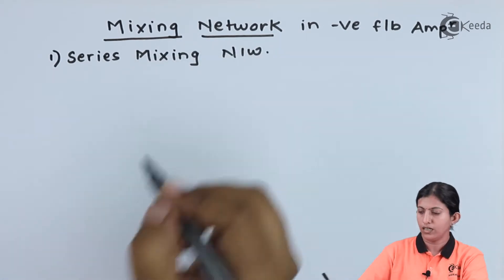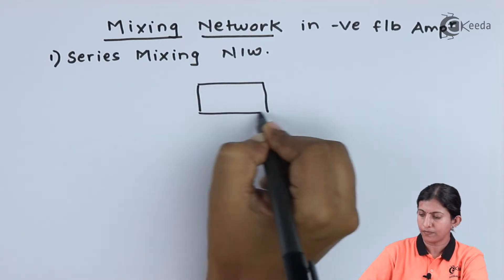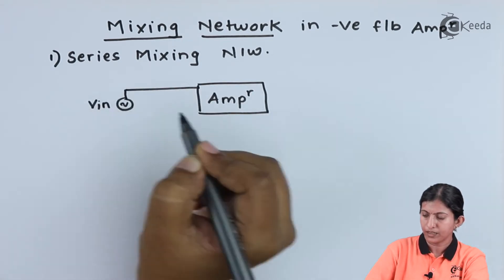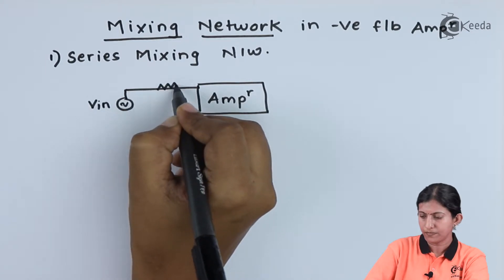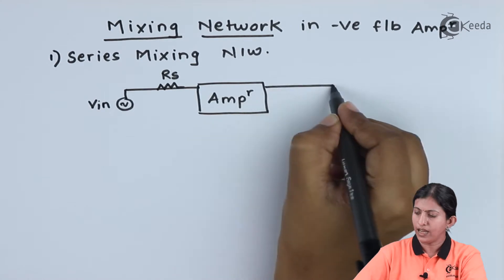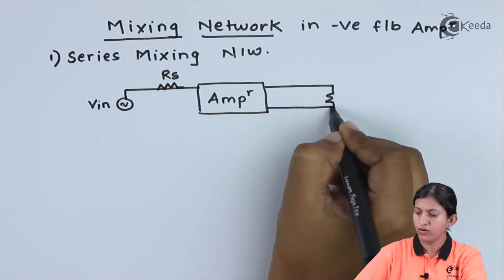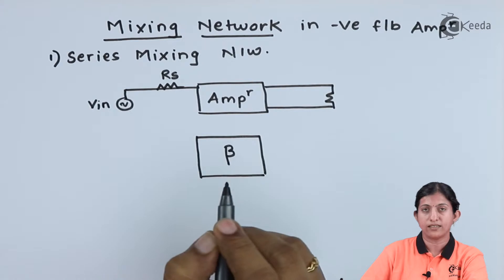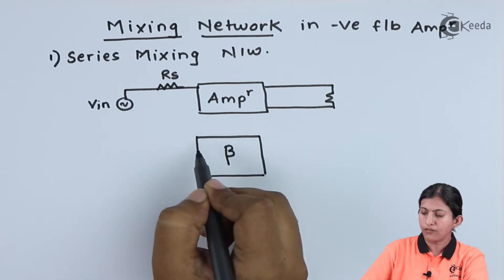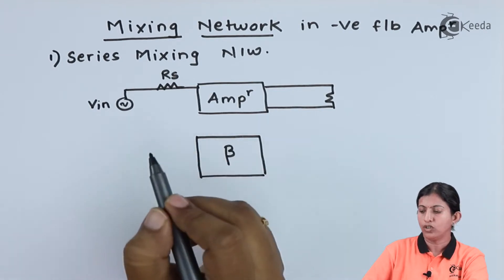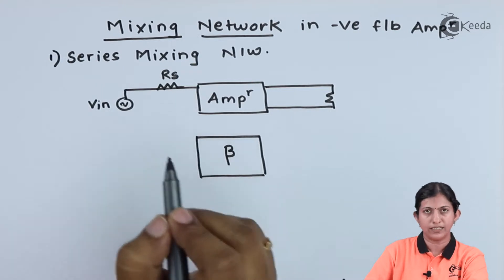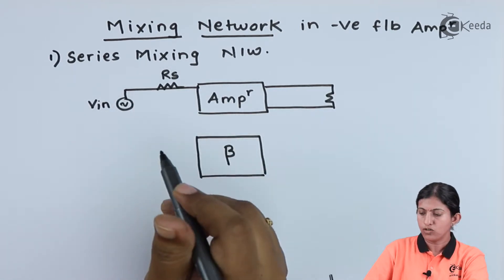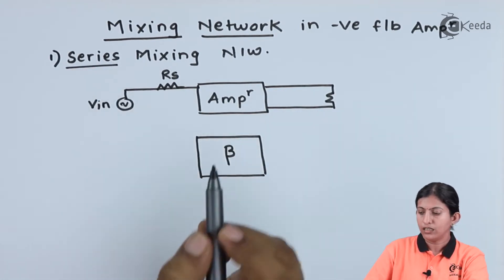In the series mixing network, we use an amplifier. We apply the input Vin with series resistor Rs, and we get the output across the load resistor. We take part of the output signal, which we term beta — the feedback signal. The mixing network concentrates more on the input side.